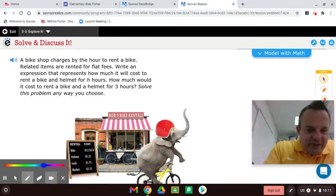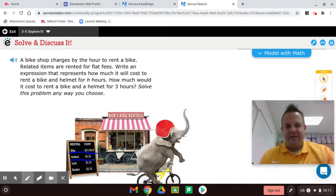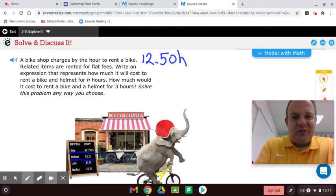So notice here, the bike costs $12.50 per hour and the helmet is $5.25. Alright, so what that's going to look like is $12.50 per hour. So when the variable is right next to the number, that means multiply.